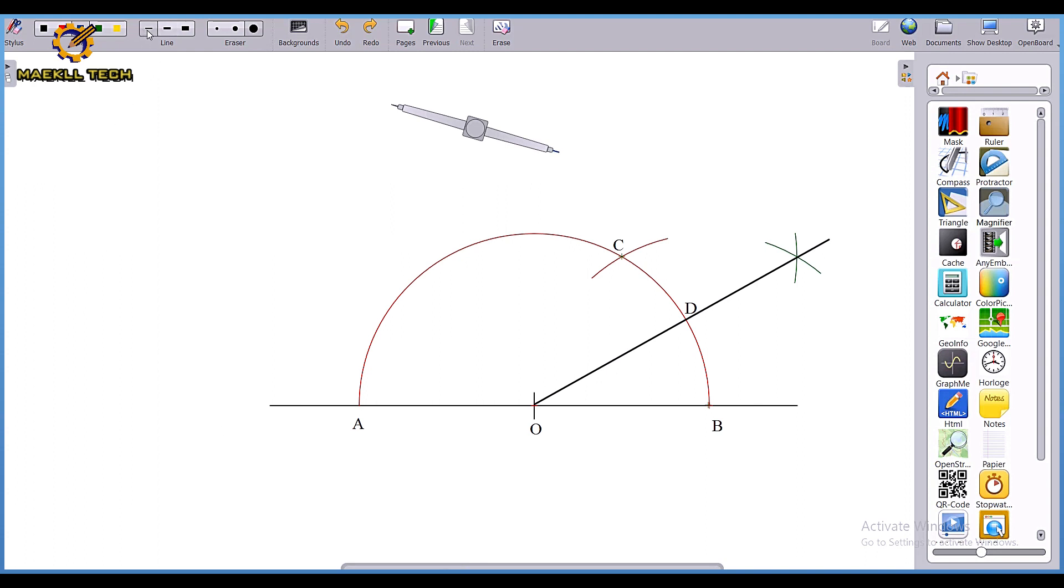Now to get angle 15 degrees, first I need to construct angle 60 degrees. So my list, the angle from B to C here is 60 degrees. If you don't know how we got that, kindly check the link under the description below.